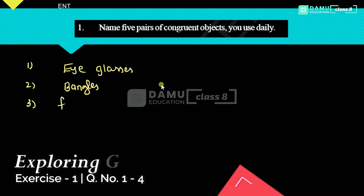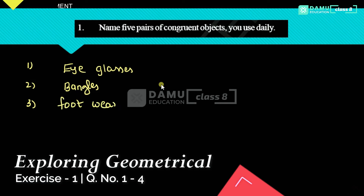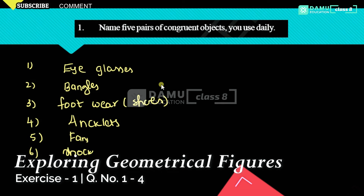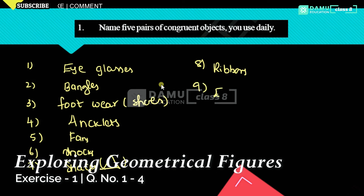Next, girls use bangles that are also congruent to each other. Then footwear — slippers or shoes — are also congruent. Anklets are also congruent. Fans from the same company are congruent. Socks are also congruent. Snacks with triangular shapes are also congruent.